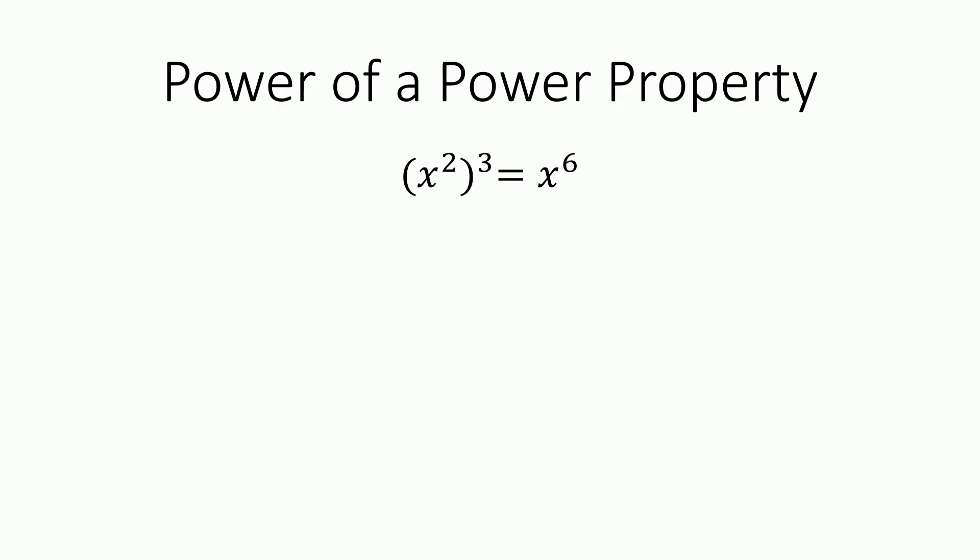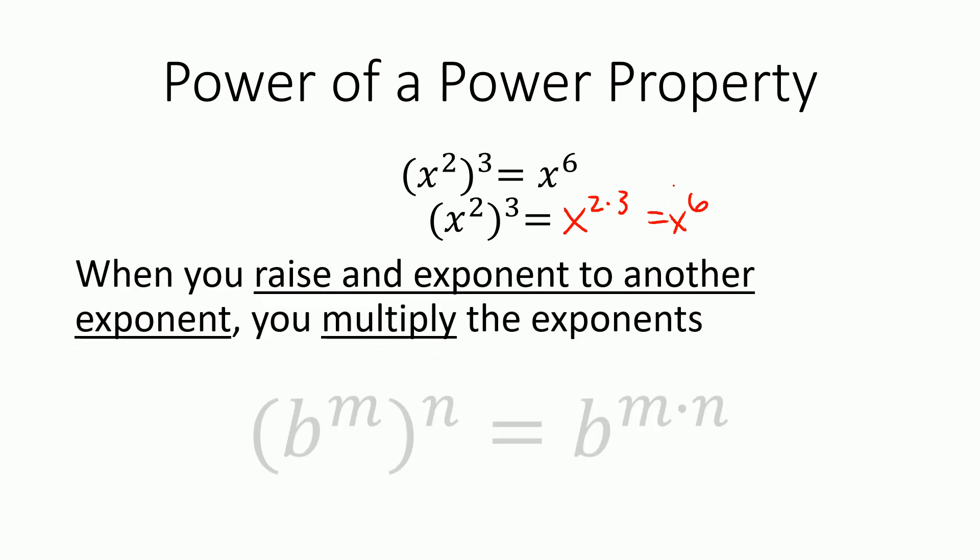Now, finally, for the power of a power property, when we have x to the second power, and then that whole thing raised to the third power, we get x to the sixth. And we know it's not multiplication, so we can't add the powers. And it's not division, so we don't subtract them. But we can get six if we multiply two times three. So it would become x to the two times three equals x to the sixth. So when we have a power of a power, when we raise an exponent to another exponent, we multiply the exponents. So for any base b to the m to the n becomes b to the m times n.